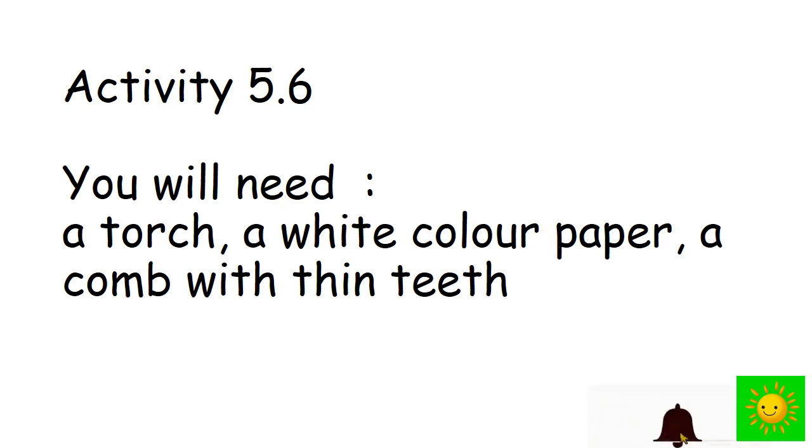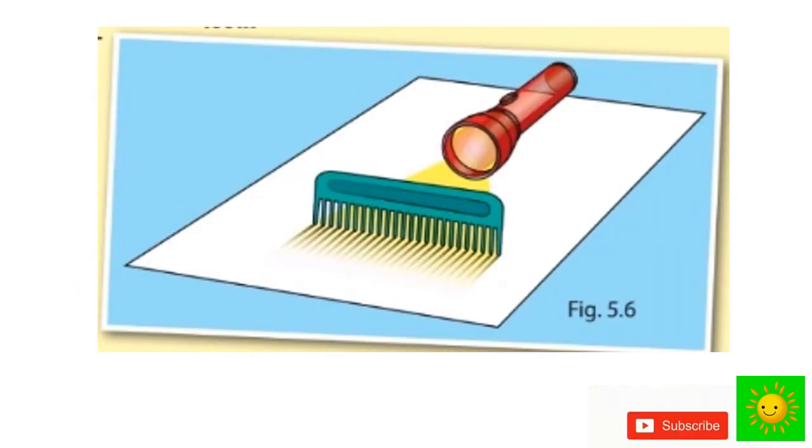There are several activities to observe light beams. The first one: you need a torch, white color paper, and a comb with thin teeth. Choose a desk kept in a dark place and keep the comb as shown in the figure on the white paper perpendicular to the desk with the teeth directed downwards.